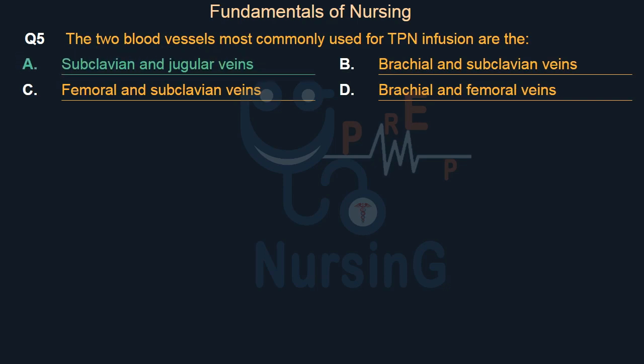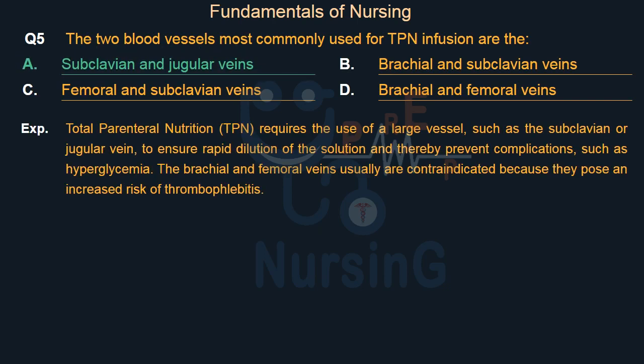Total parenteral nutrition (TPN) requires the use of a large vessel, such as the subclavian or jugular vein, to ensure rapid dilution of the solution and thereby prevent complications such as hyperglycemia. The brachial and femoral veins are usually contraindicated because they pose an increased risk of thrombophlebitis.